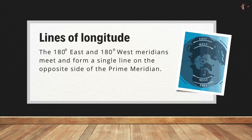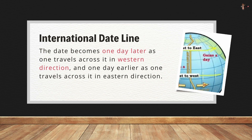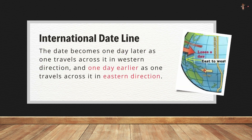The 180 degrees east and 180 degrees west meridians meet and form a single line on the opposite side of the prime meridian — it is called the 180-degree longitude or the international date line. The date becomes one day later as one travels across the international date line in the western direction, and one day earlier as one travels across it in the eastern direction.